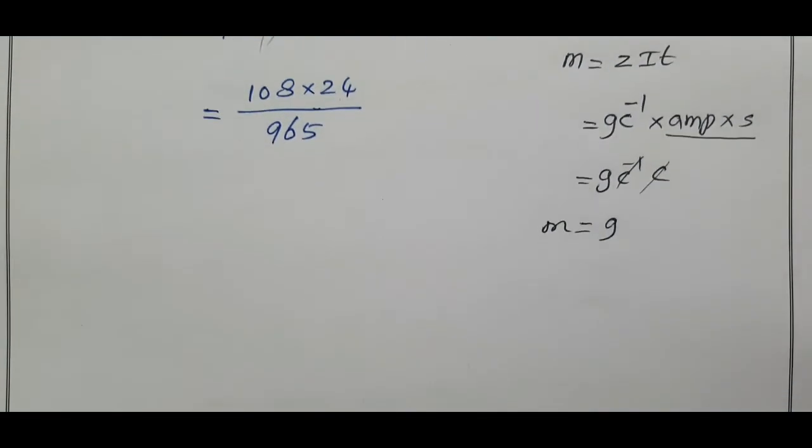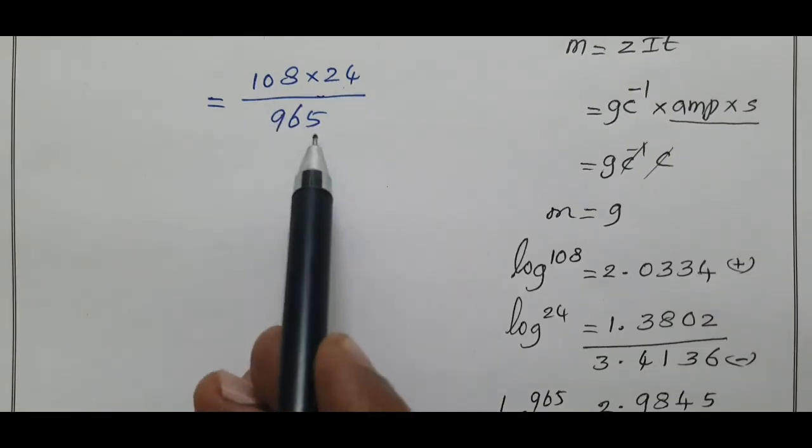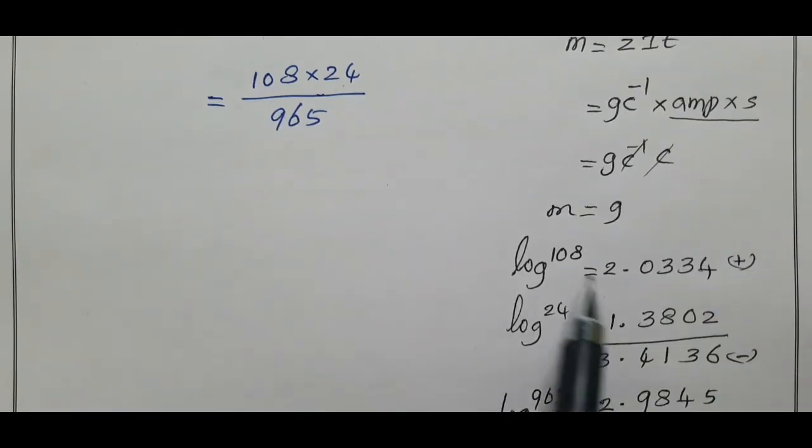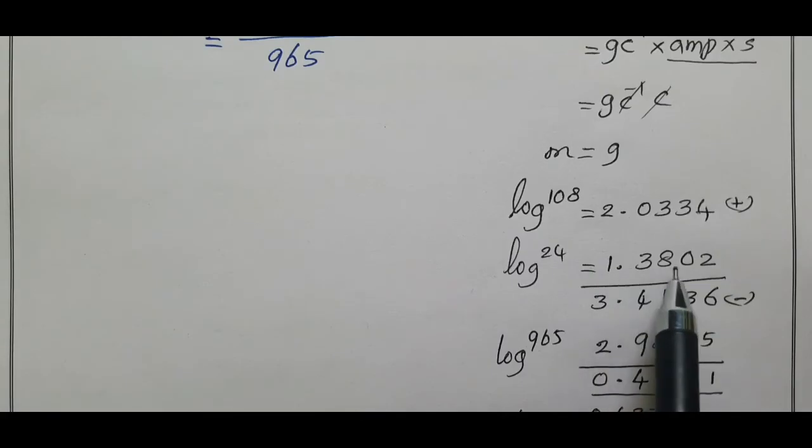Log 108: it's a 3 digit number, therefore 2.0334. Log 24: 1.3802. We have multiplication symbol between these two, therefore we add the log values. The total is 3.4136.